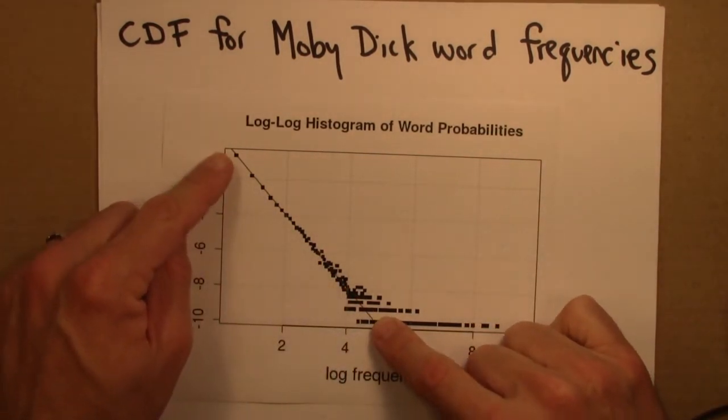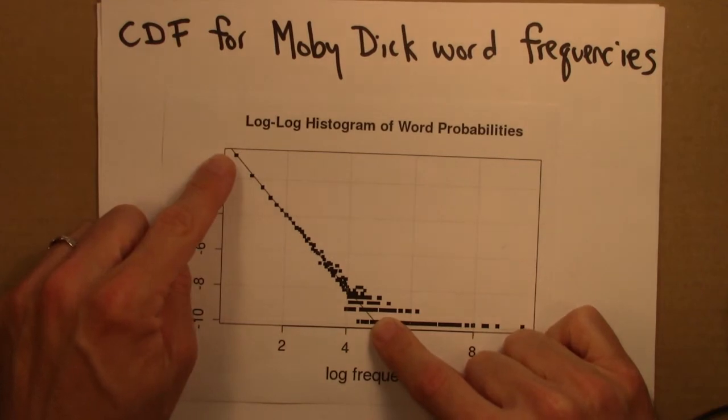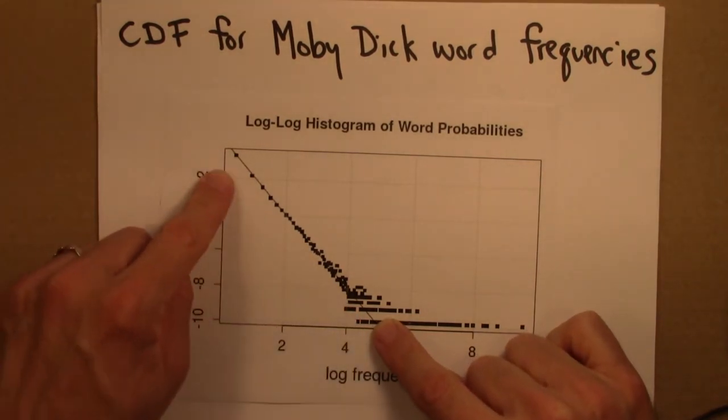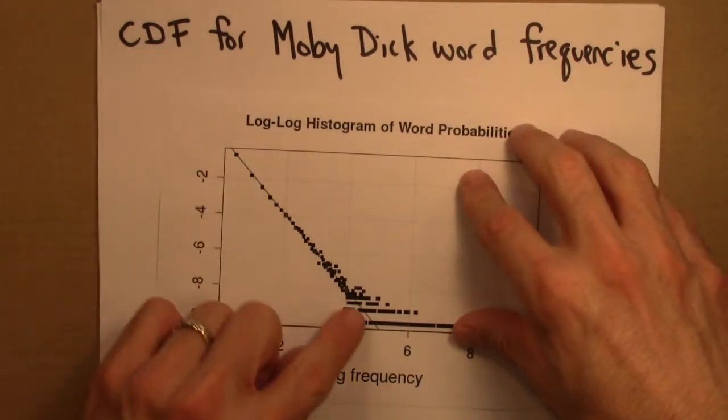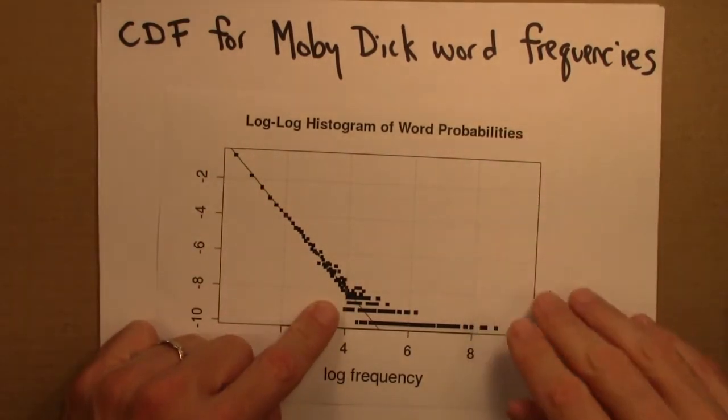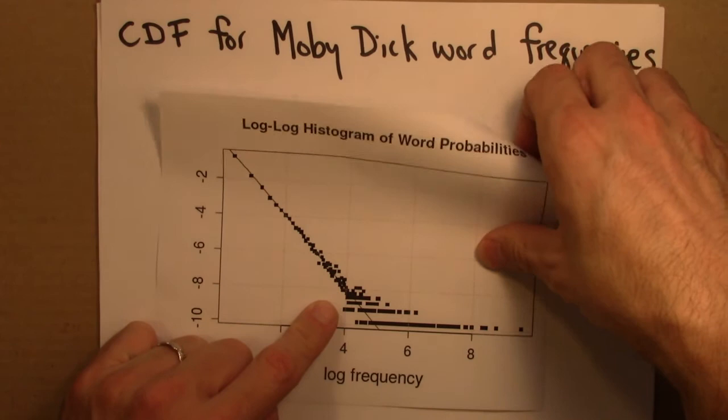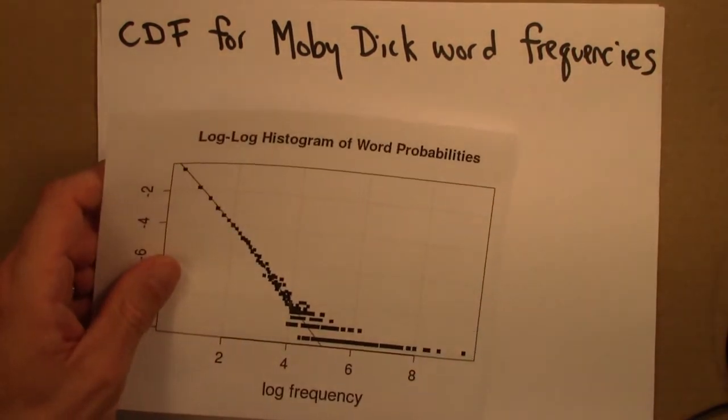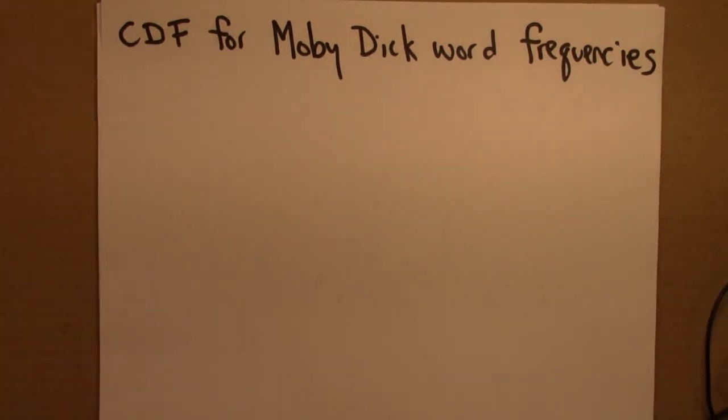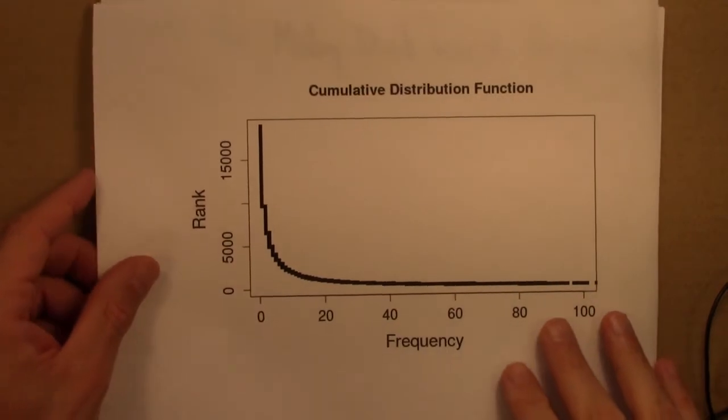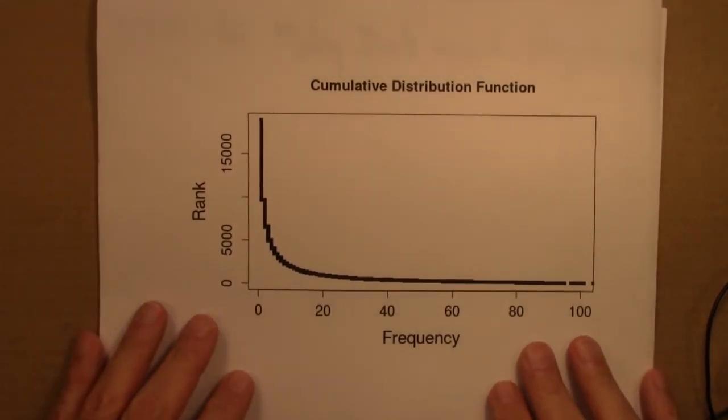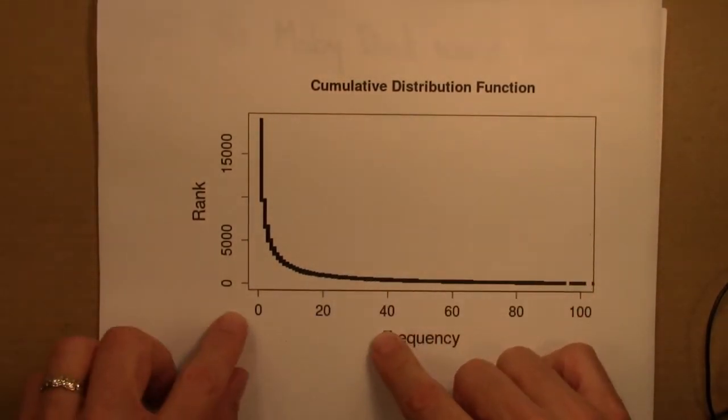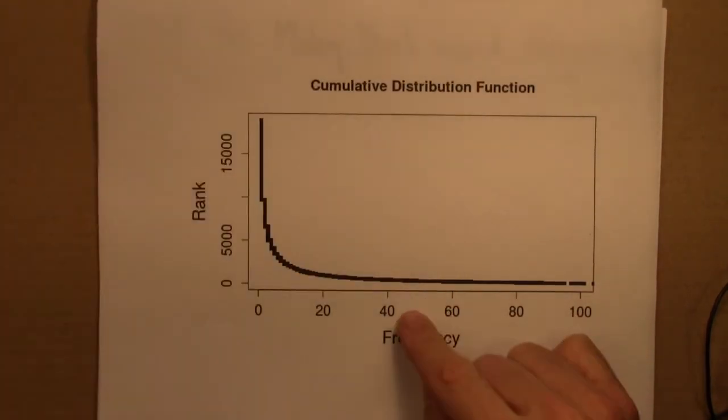And this led us to suspect that the word frequency is distributed according to a power law. So now, let's see what this data would look like if we did a cumulative distribution function. So I have one of those here. So here's the cumulative distribution function for word frequencies in Moby Dick. So it's the same data that was in this plot, just plotted differently.